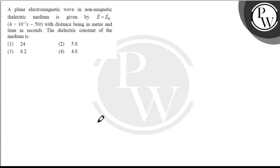The speed of the wave in the medium will be v equals omega by k. Omega here is 50 and k is 4 into 10 to the power minus 7, so this becomes 50 by 4 into 10 to the power 7.